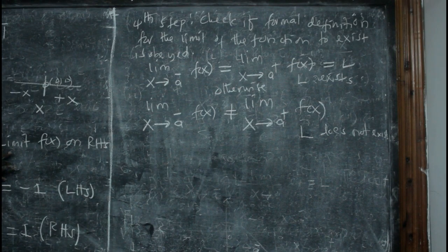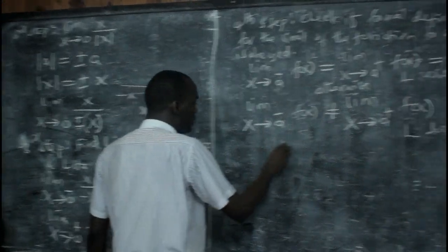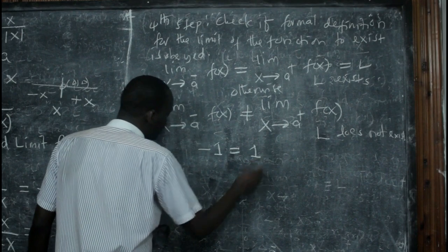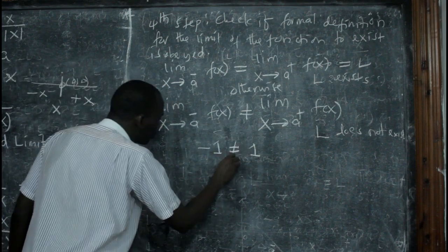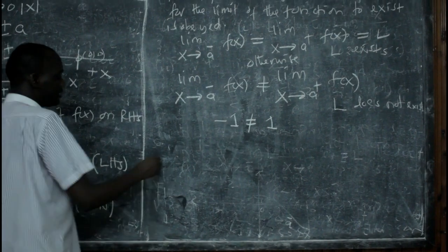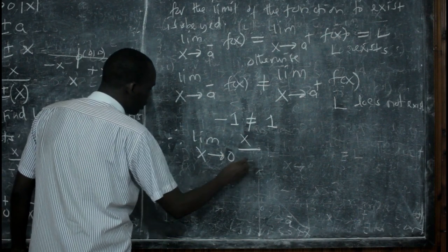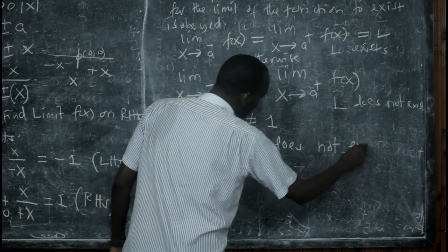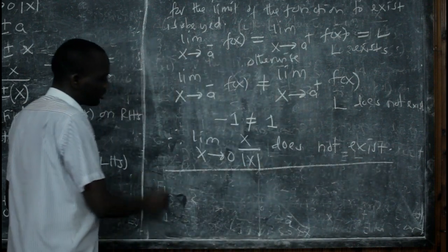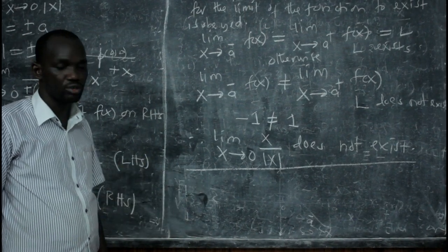Coming back to our case: the left-hand limit equals negative 1 and the right-hand limit equals positive 1. Negative 1 is not equal to positive 1. Since these two limits are not equal, we conclude that the limit of the function x over the absolute value of x as x approaches zero does not exist. This is the final answer for Part A of Question 1, and you are entitled to the two marks offered.